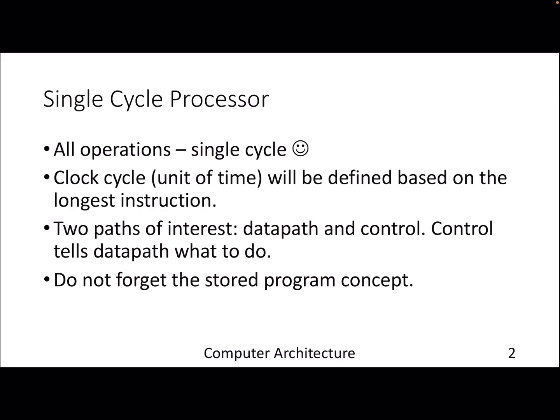There are two additional things we will discuss in the context of a single cycle processor: the data path and the control. The data path deals with where exactly your data is stored and all the units that operate on data, while the control unit tells the data path what to do at what point in time. Throughout this discussion, don't forget the stored program concept, which is the von Neumann model.